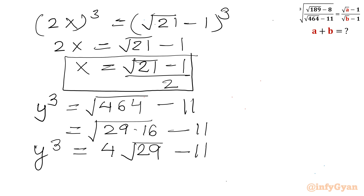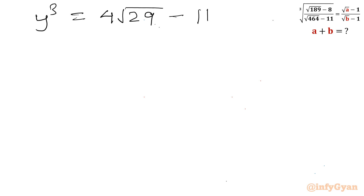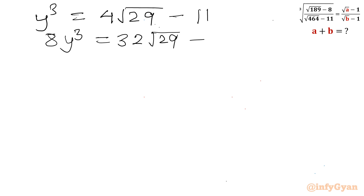Now I will use the same trick — multiply both sides by 8. So I can write 8y³ equals 8 times 4·root 29 minus 11 times 8, giving 32·root 29 minus 88. The left-hand side becomes (2y)³.